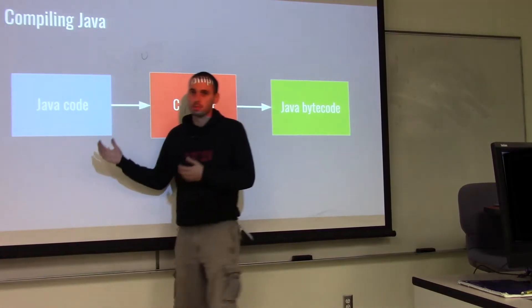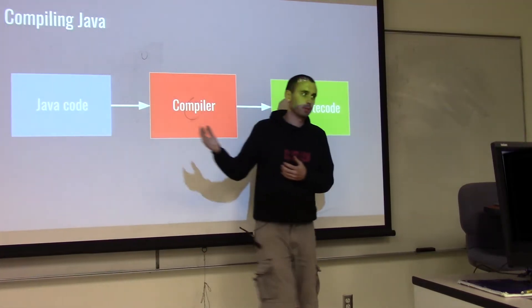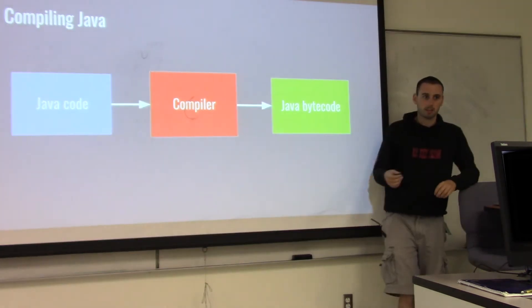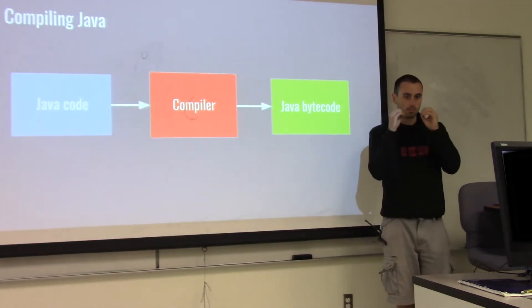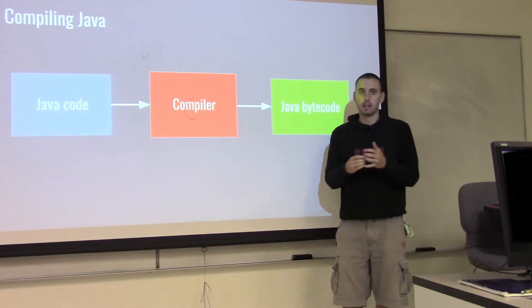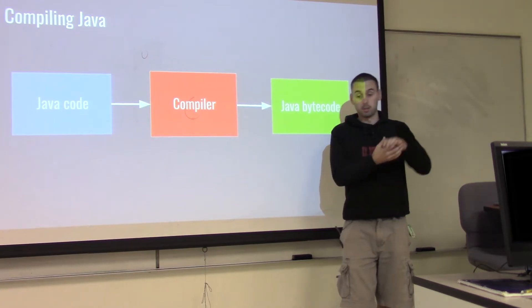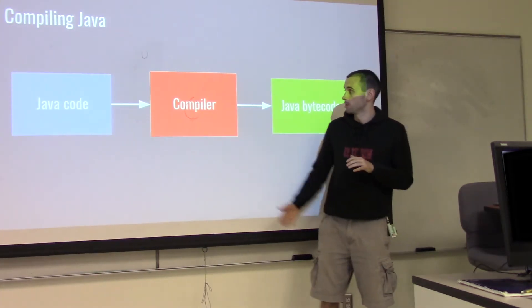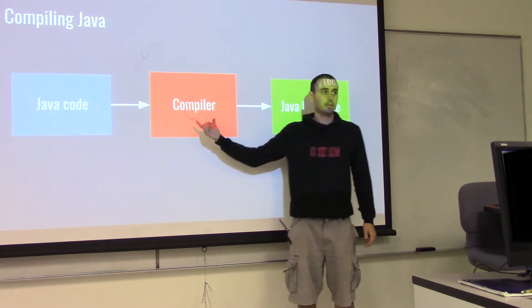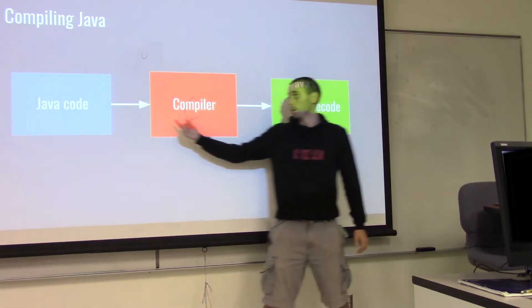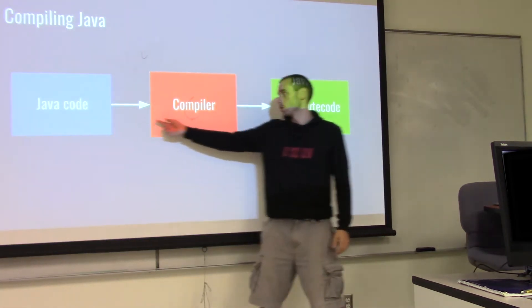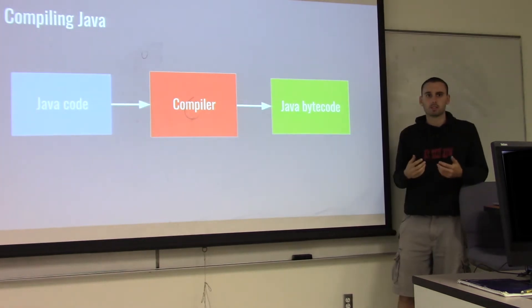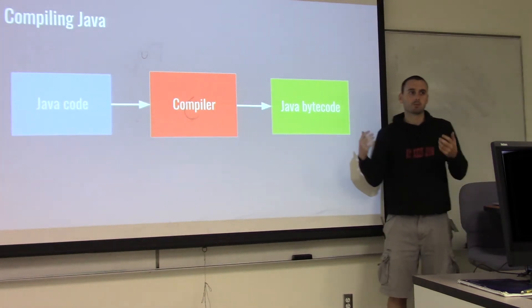I talked about Java just as a programming language, but computers can't understand Java as it's written. Computers understand really, really small instructions. A line of Java code can correspond to a lot of instructions that the computer has to run. So there's this thing called the compiler that sits in the middle. It takes the code that we can read — the human-readable Java code — and translates it into Java bytecode. Eventually it gets turned into something called assembly and then an actual binary.